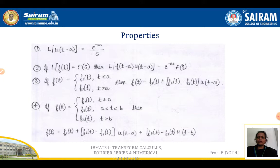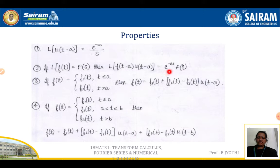Coming to the properties: the first property is that L{u(t − a)} is given by e^(−as) / s. The second property is: if L{f(t)} = F(s), then L{f(t − a) · u(t − a)} = e^(−as) · F(s).